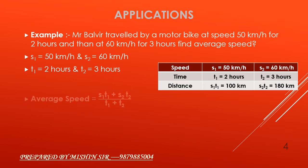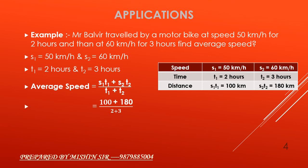Applying the formula, average speed is equal to s1 t1 plus s2 t2 upon t1 plus t2. Substituting the values from the table: 100 plus 180 upon 2 plus 3 is equal to 280 upon 5. We get 56 km per hour.